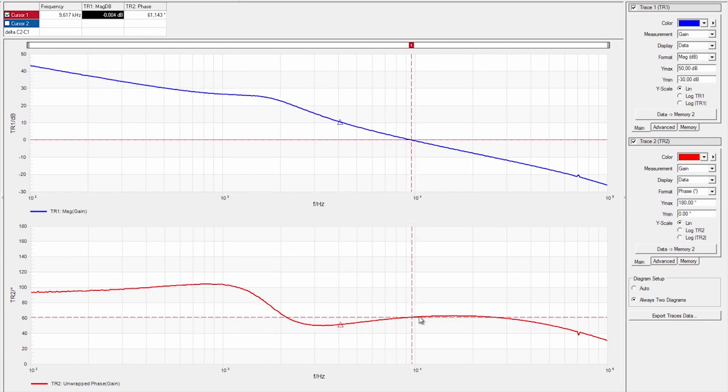We define the phase margin as when we draw a line from up here down to here, how much above minus 180 degrees it's going to be.